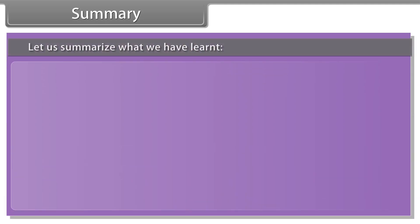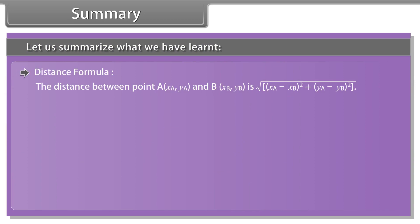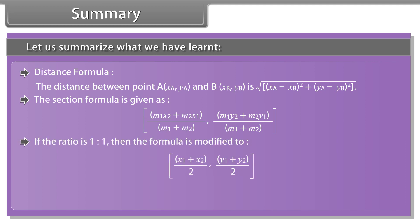Summary. Let us summarize what we have learned. Distance formula: the distance between point A(xA, yA) and B(xB, yB) is under root of xA minus xB whole square plus yA minus yB whole square. The section formula is given as M1X2 plus M2X1 by M1 plus M2, M1Y2 plus M2Y1 by M1 plus M2. If the ratio is 1 is to 1, then the formula is modified to x1 plus x2 by 2, y1 plus y2 by 2. Area of triangle is 1 by 2 into x1 into y2 minus y3 plus x2 into y3 minus y1 plus x3 into y1 minus y2.